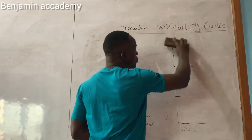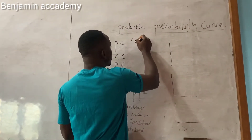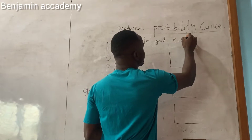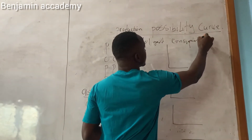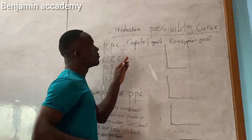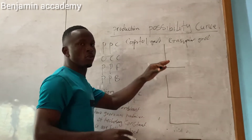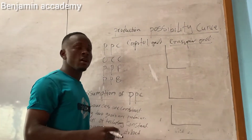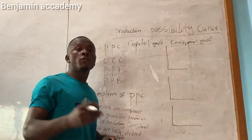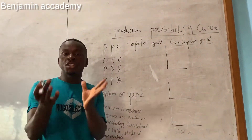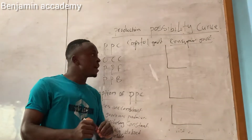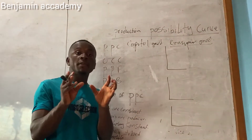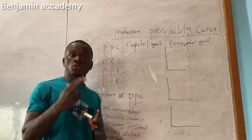Instead of calling them good X or good Y, we can also refer to them as capital goods or consumer goods. Consumer goods are goods which are consumed, while capital goods are those goods produced for further production — for example, a machine bought in a factory to produce more goods.